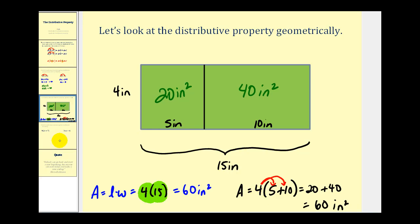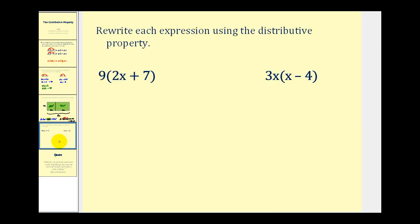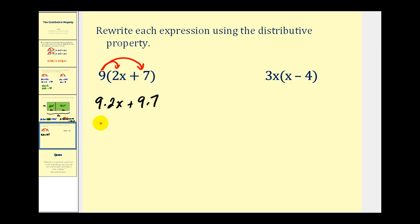Let's take a look at two more examples where we rewrite expressions using the distributive property. In the first example, we'll distribute the nine — multiply nine and 2x, and also multiply nine and seven. So we'll have nine times 2x plus nine times seven. Nine times 2x is 18x and nine times seven is sixty-three.